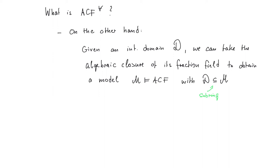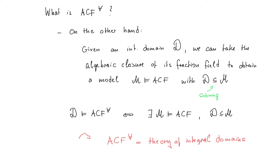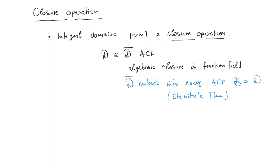Moreover, the following is not an axiom but is a consequence of ACF in the form of a universal sentence: whenever a product is zero, one of the factors must be zero. These two together imply that any model of the universal part of ACF is an integral domain. On the other hand, given an integral domain D, we can take the algebraic closure of its fraction field and obtain a model of ACF — an algebraically closed field — which contains D as a subring. Note that due to the choice of our language, substructures are just subrings. Since every integral domain is the subring of an algebraically closed field, it follows that the universal part of ACF is exactly the theory of integral domains.